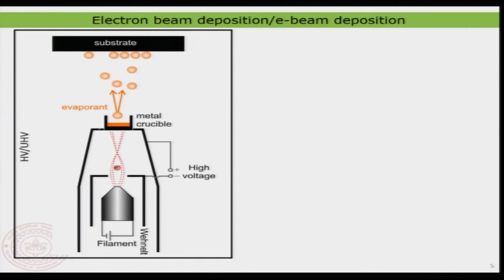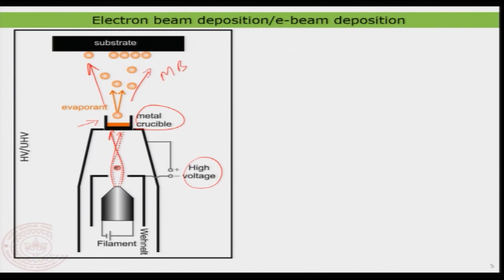In e-beam deposition, you have a metal crucible made of molybdenum or similar high-melting-point material. Fast-moving electrons bombard the back side of the metal crucible. The speed of electrons is controlled by voltage, and the filament determines how many electrons are emitted. This electron bombardment heats the metal crucible, and once it is hot, evaporant molecules evacuate out of the crucible, forming a molecular beam — atoms coming one by one and getting deposited on the surface.